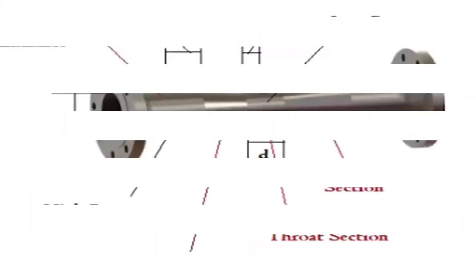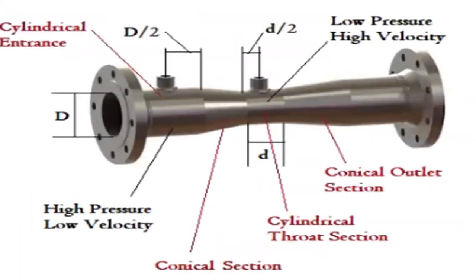The venturimeter consists of four parts: a cylindrical inlet section, a conical convergent section, a cylindrical throat, and a conical divergent outlet. This is the conical divergent outlet section.